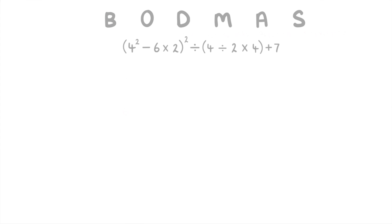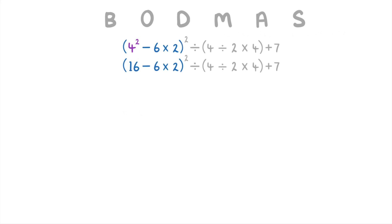Let's try one more. First we look for any brackets, and this time there are two sets, so we'll look at one and then the other. It's up to you which to do first, but in general it's easier to start on the left. Notice we haven't highlighted the order of 2 up here — that's because it's outside the bracket, so we don't consider it yet. Within the bracket, the first thing is the order of 2 on the 4, so 4 squared equals 16, giving us 16 minus 6 times 2 inside the bracket.